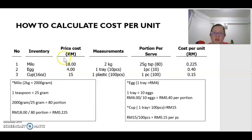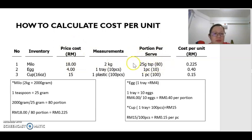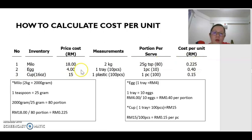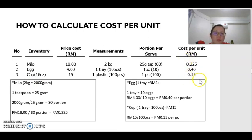This slide will show you how to calculate cost per unit. Let's say you have Milo, egg, and cup. For Milo, the cost price is RM18 for two kilos — you need to know how many servings or how many cups of Milo you can prepare with two kilos, and from that you calculate the cost per unit. For the egg, the cost price might be RM4 per tray, and one tray is 10 pieces, so for every one piece you need to pay 40 cents — that is the cost per unit. Similarly with the cup. With that, we can calculate the cost to prepare one cup of drink.